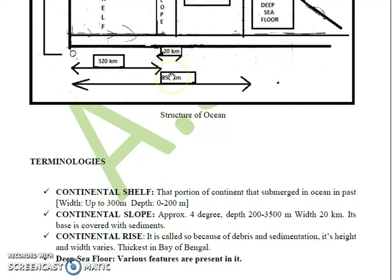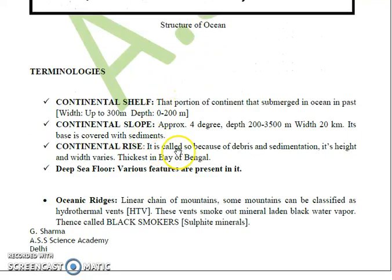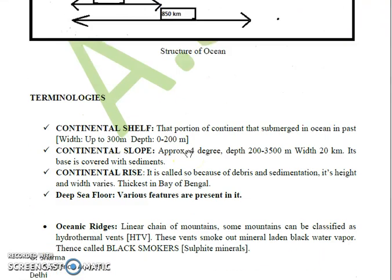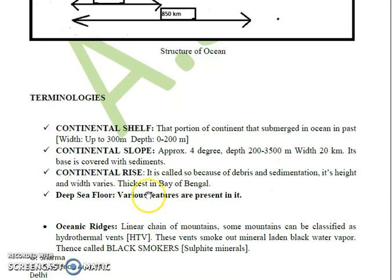Coming to the continental rise, the third part of the ocean structure. Continental rise forms due to debris and sedimentation deposition at the base of the continental slope, where the oceanic crust is covered with sediments brought by turbidity currents. Continental rise varies in width and thickness and is observed to be thickest in the Bay of Bengal, because the Ganga and Brahmaputra rivers add sediment load there. Brahmaputra is the river that carries the maximum sediment load.